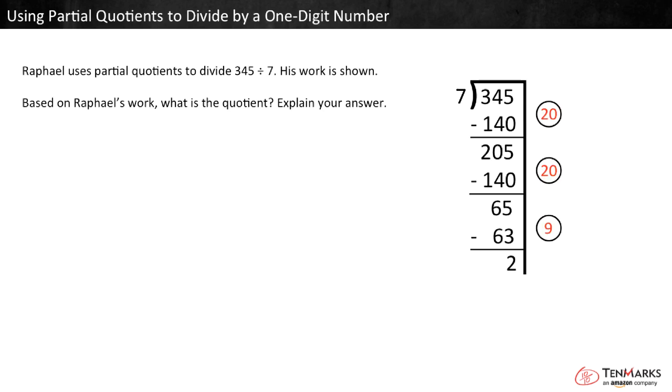Look at another example. Raphael uses partial quotients to divide 345 divided by 7. His work is shown. Based on Raphael's work, what is the quotient? Explain your answer.